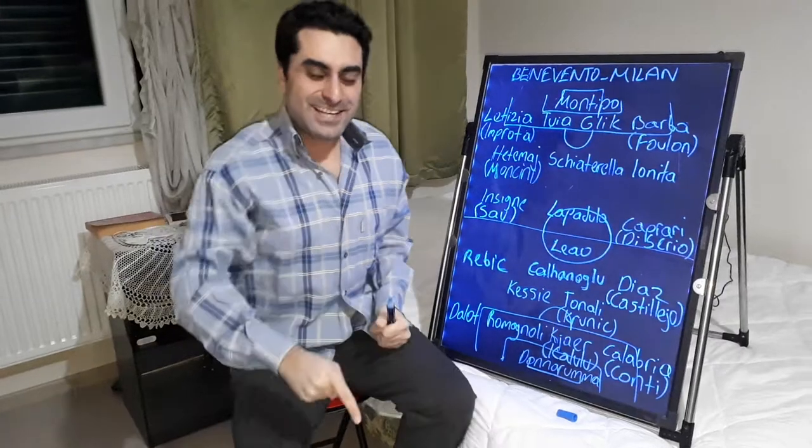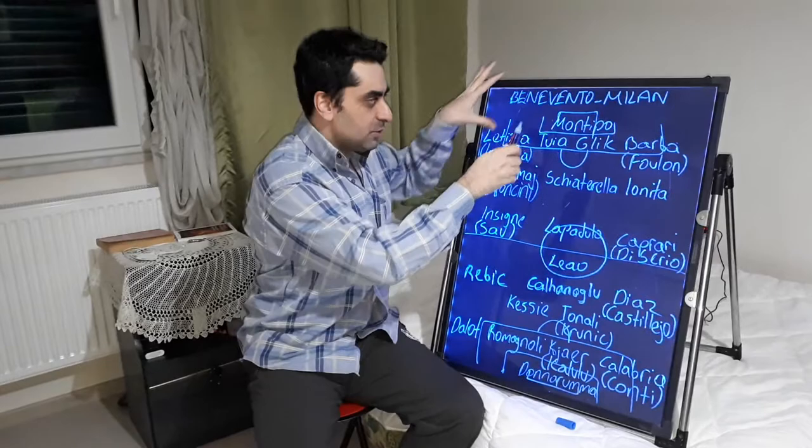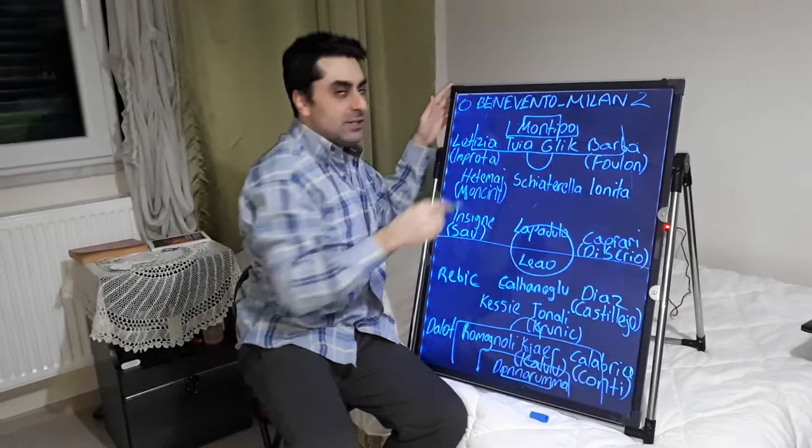This is Italian Football on our channel, my friends. I want to make analyses and talk about the tactics of the Benevento-Milan game. Milan won 2-0 against Benevento in an away game.